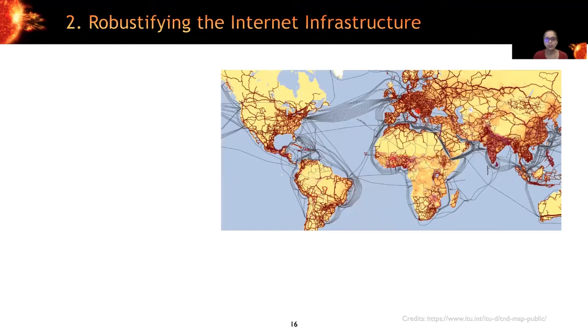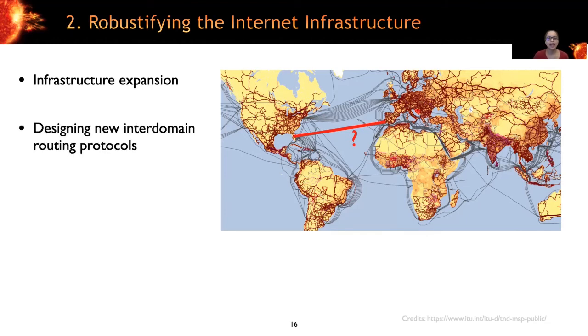Next, we need to devise solutions for improving long-term resilience of the infrastructure. For example, this could involve adding new cables in locations that are less vulnerable and other infrastructure expansion solutions. Another interesting direction is design of new inter-domain routing protocols that will improve the path diversity in the wide area network during solar superstorms.